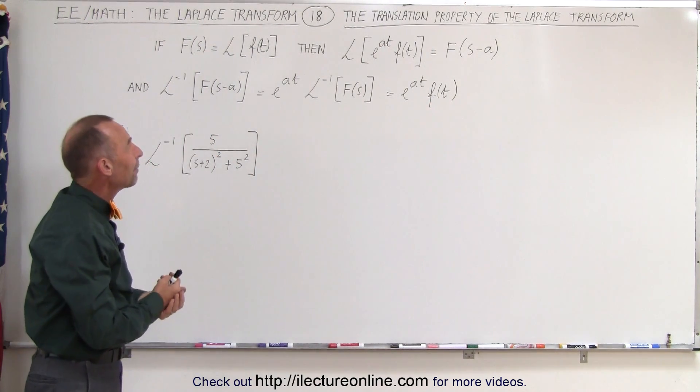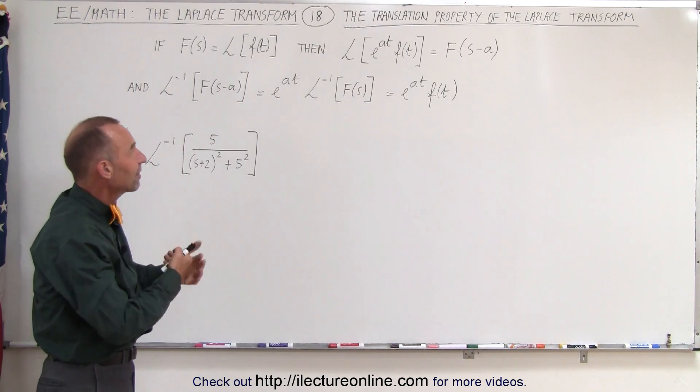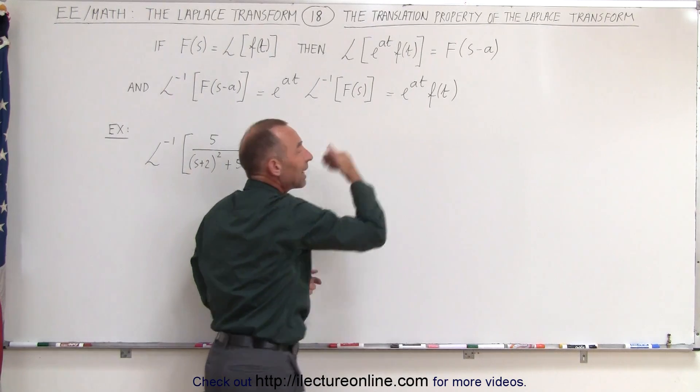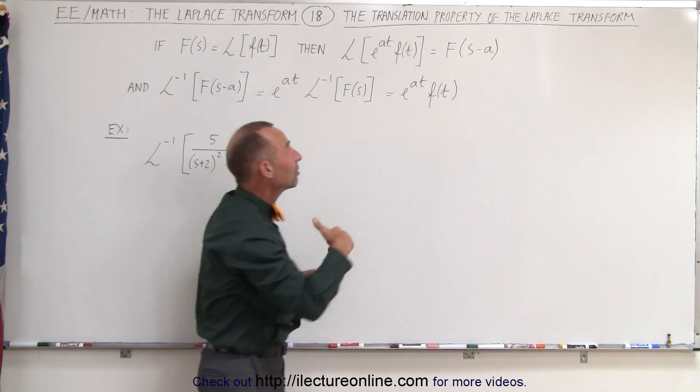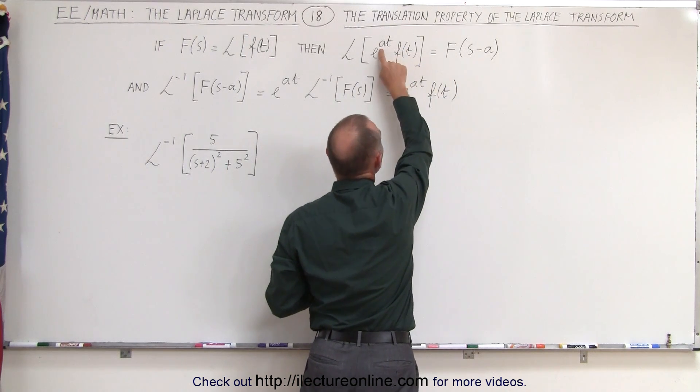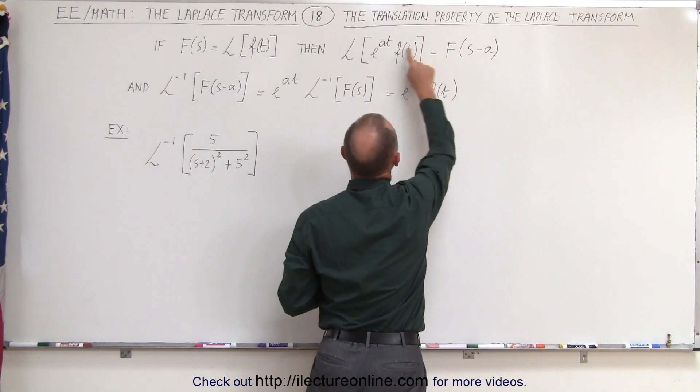So notice all that happens is if we multiply the function of the time domain by e to the at or e to the minus at, then when we take the Laplace transform we get the transformation of s minus a if it's positive at, and s plus a if it's negative at.